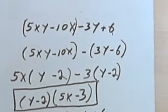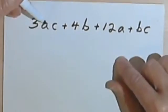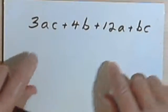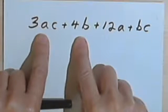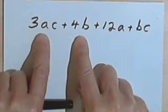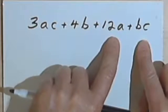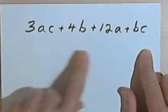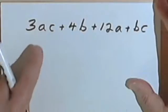Let's look at one more kind of problem. So here I have 3ac plus 4b plus 12a plus bc. And if I look at it and think what's gonna happen if I combine these first two terms, I realize there's nothing about the first two terms that I could factor. And looking at the second two terms, there's also nothing that I could factor.